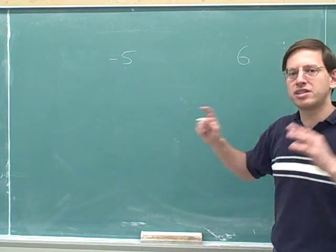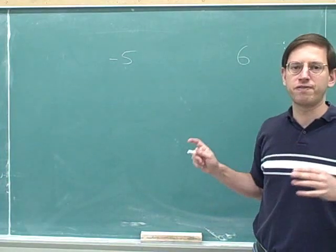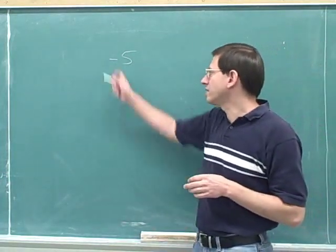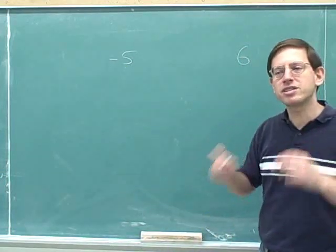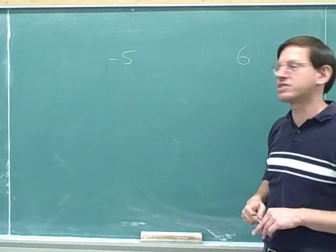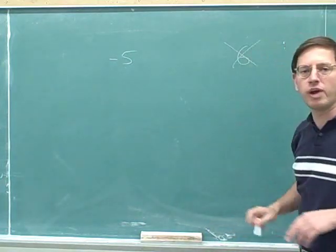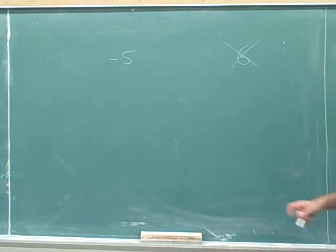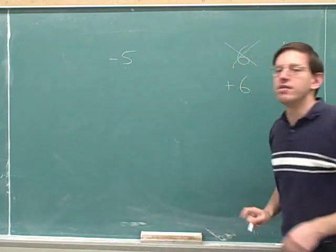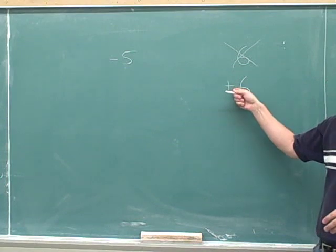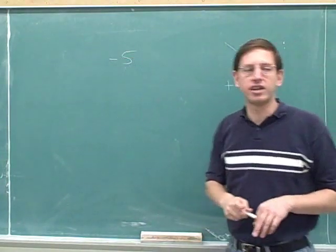However, I'm going to be bossy and dictatorial and tell you not to do that in this portion of physics. Not only do you need to include the sign on every negative number, you must include the sign on every positive number as well. So writing 6 without a sign is a bad way to write positive 6. The good way to write positive 6 is with an explicit positive sign in front of it.